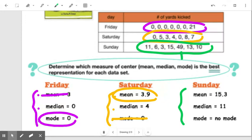So when I look at this, first of all, there's no mode. So I cannot use a mode to represent this data. I have to go between my median and my mean.